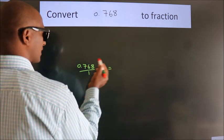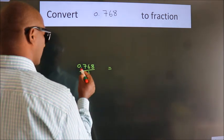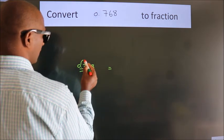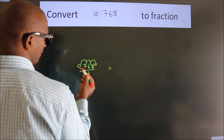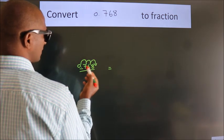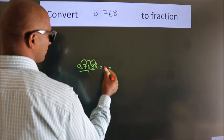To convert this to fraction, we have to move this decimal after 1, 2, 3 numbers. To move this decimal after 3 numbers, we have to multiply it with 1000.